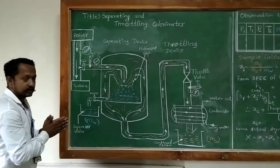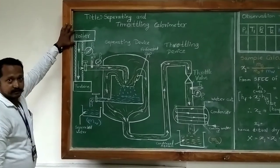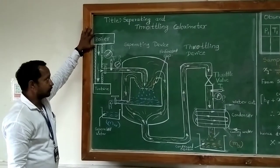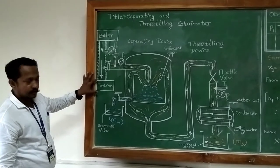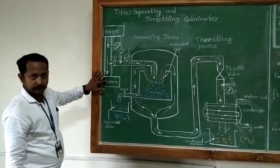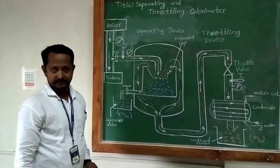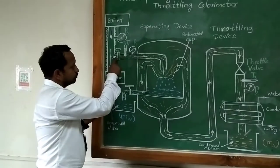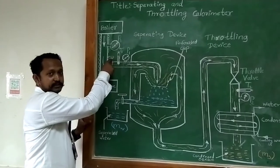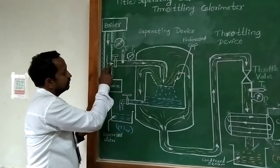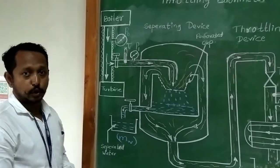Today we will discuss the separating calorimeter in detail. Let us see a case of an actual steam power plant in which the boiler generates steam, and that steam is supplied to the turbine. Whenever this steam is supplied to the turbine, some of the sample steam is taken to the device — the separating and throttling calorimeter. To take this steam from the main line to the device, we have to open this valve, and we should ensure the process does not become a throttling process here.